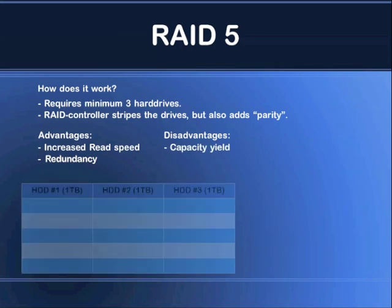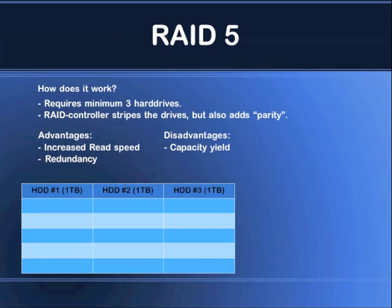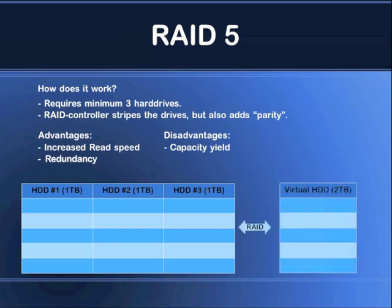In this example there are three hard drives and all three of them are one terabyte. With RAID 0 you would have a three terabyte virtual hard drive. With RAID 5 you lose the capacity of one drive, so in this case the RAID controller presents to the operating system a drive of two terabytes.